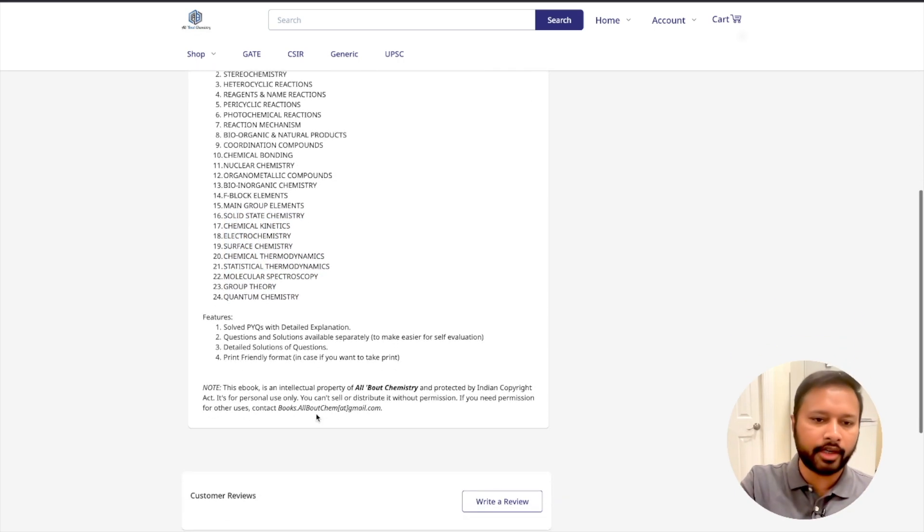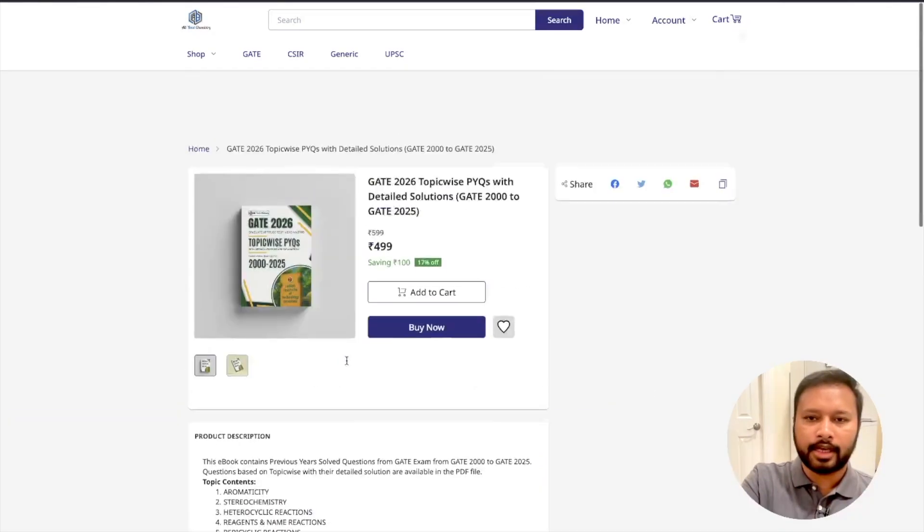You will get solved previous years questions with detailed explanation. Questions and solutions will be available separately so that you can self-evaluate yourself. You have to first see the question, try to solve it yourself. If you get stuck, then go to solution and check it out. Solutions are in detail format and this is a print-friendly format.